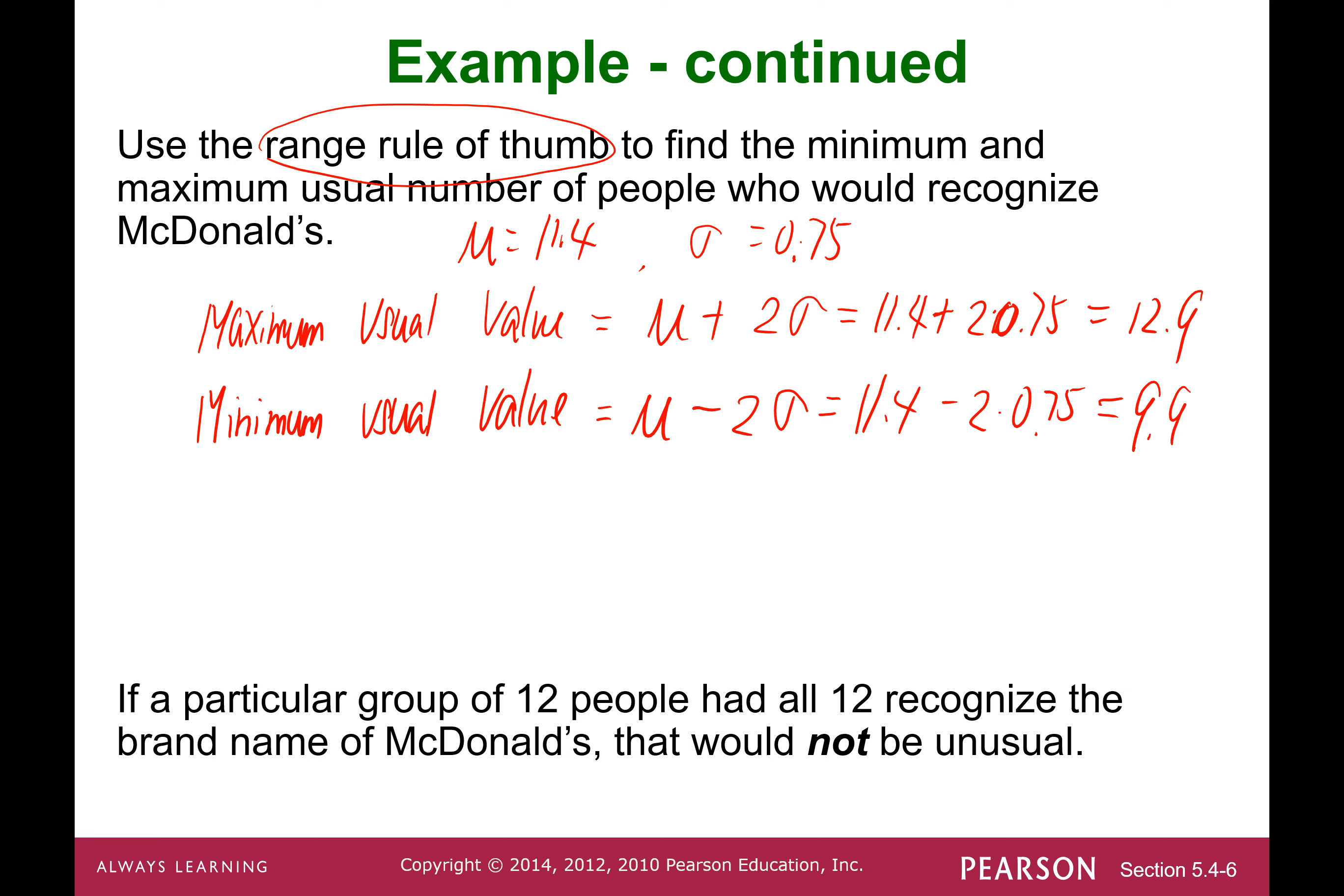As you can see, for this particular group of 12 people, 12 is greater than 9.9 and less than 12.9. This means 12 is a usual value. This is the range for usual values, so 12 people recognizing the brand name McDonald's would be usual, not unusual.